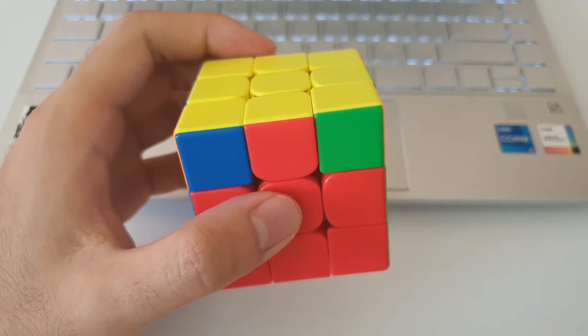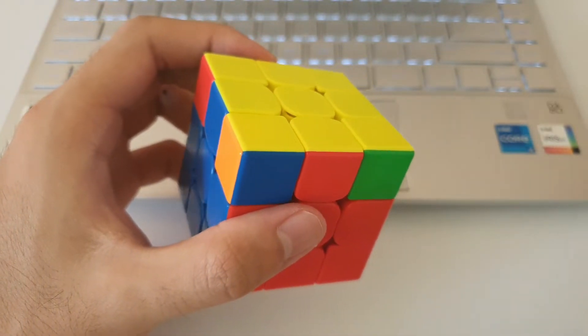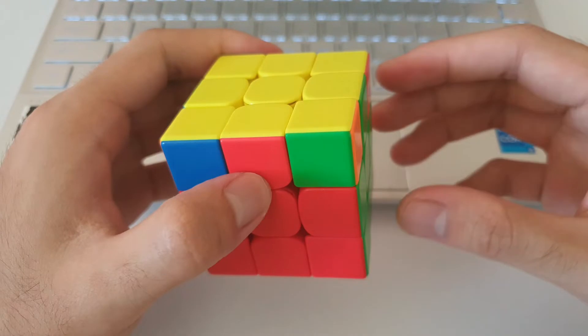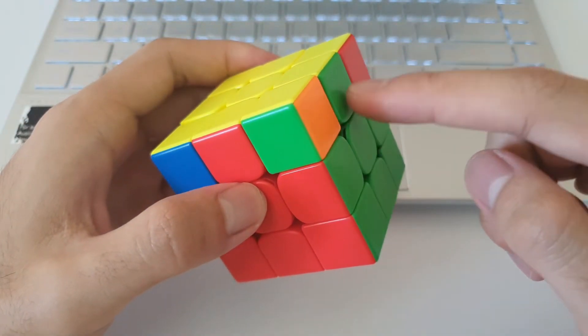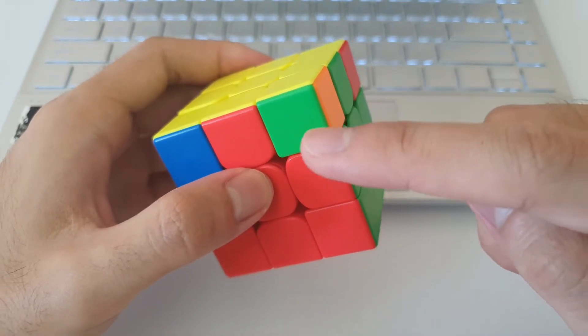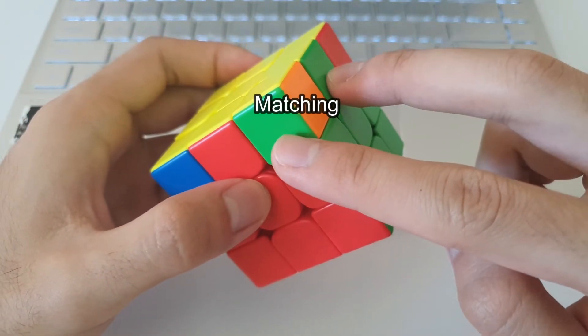But it's also important to know which direction you can do the algorithm from. So with E-perms, they can be done from two angles, and they're recognized by looking at the side edge and the front corner here.